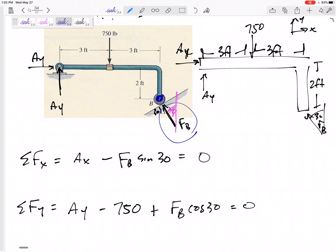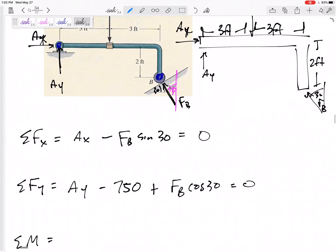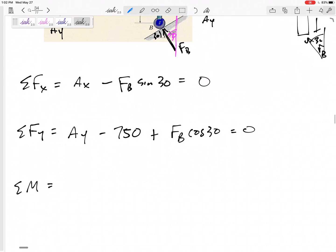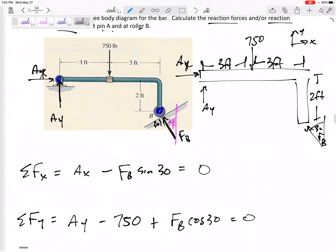How can I make this moment equation so that it only has one unknown? Well, if I sum my moments about B, then the Fb won't show up. But how about summing the moments about A? Ax and Ay go straight through it, and so they won't show up in my equation.